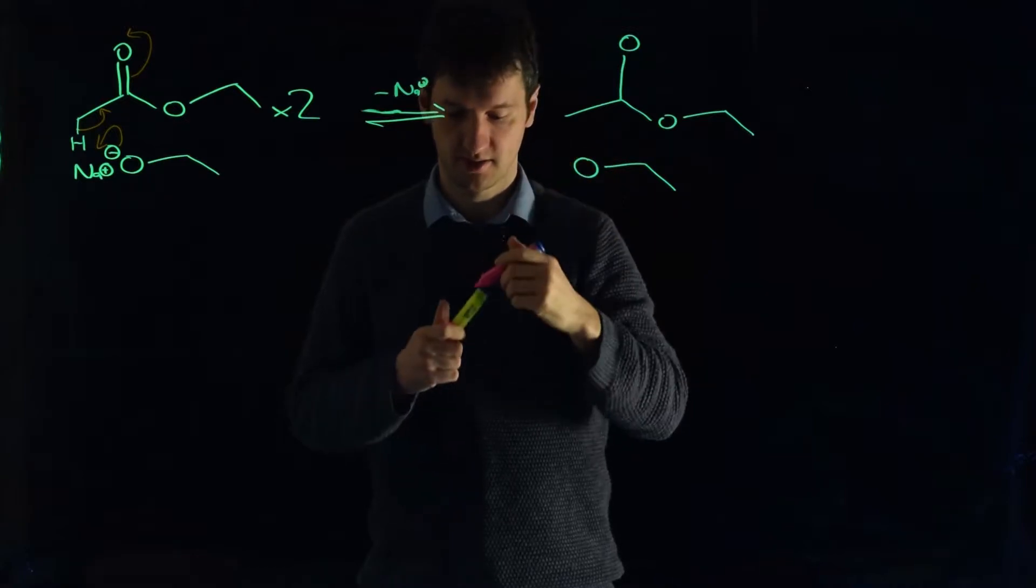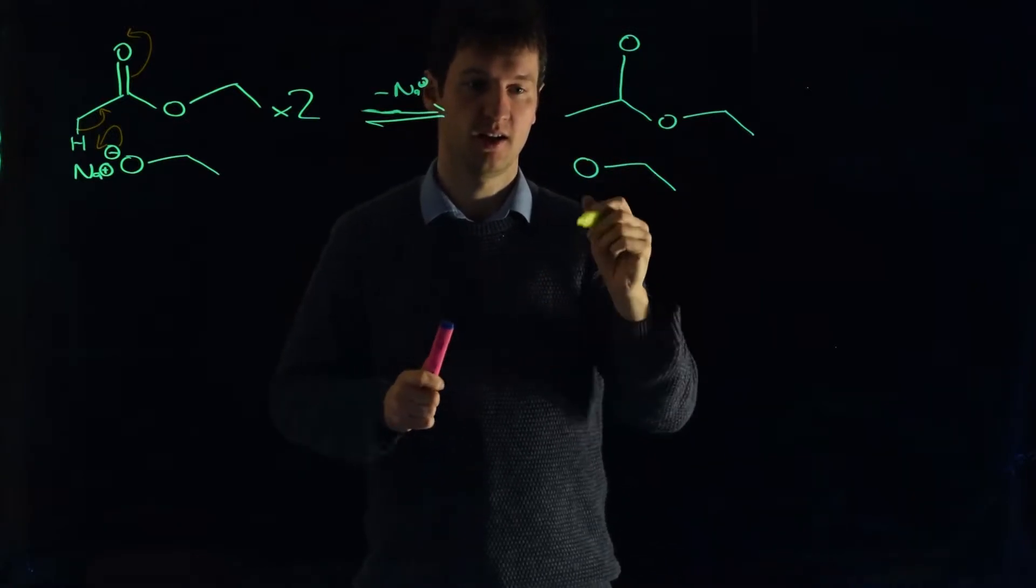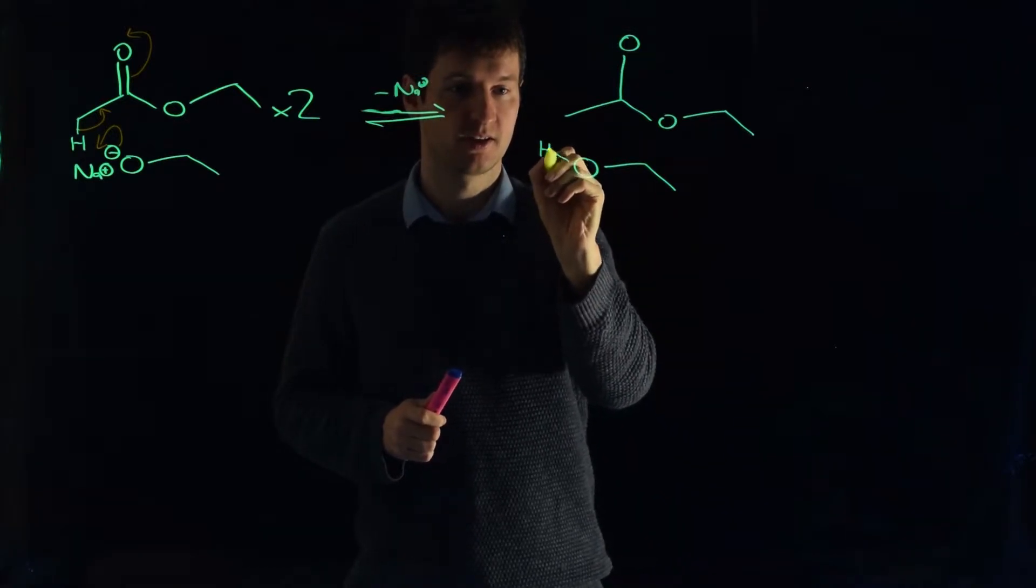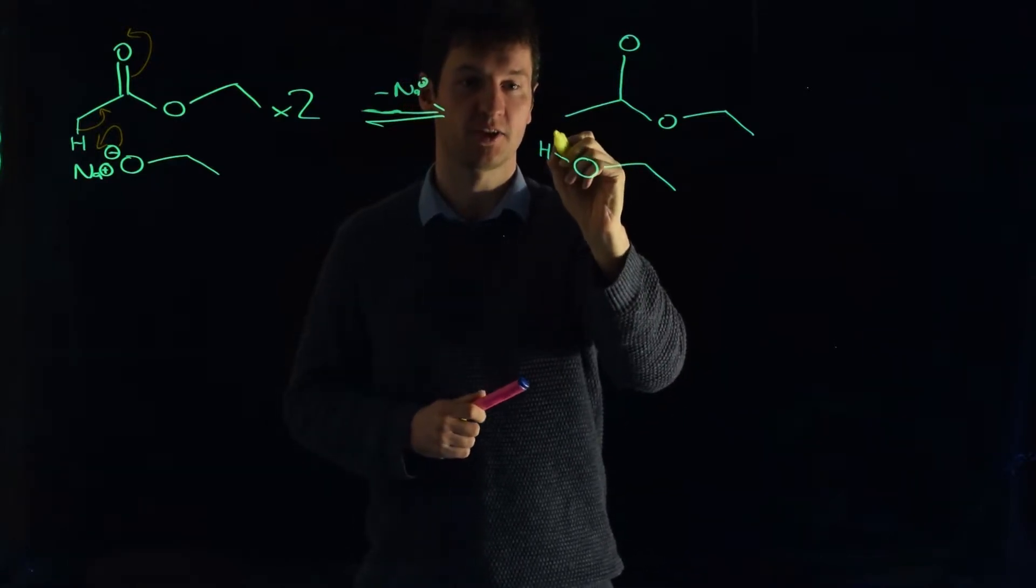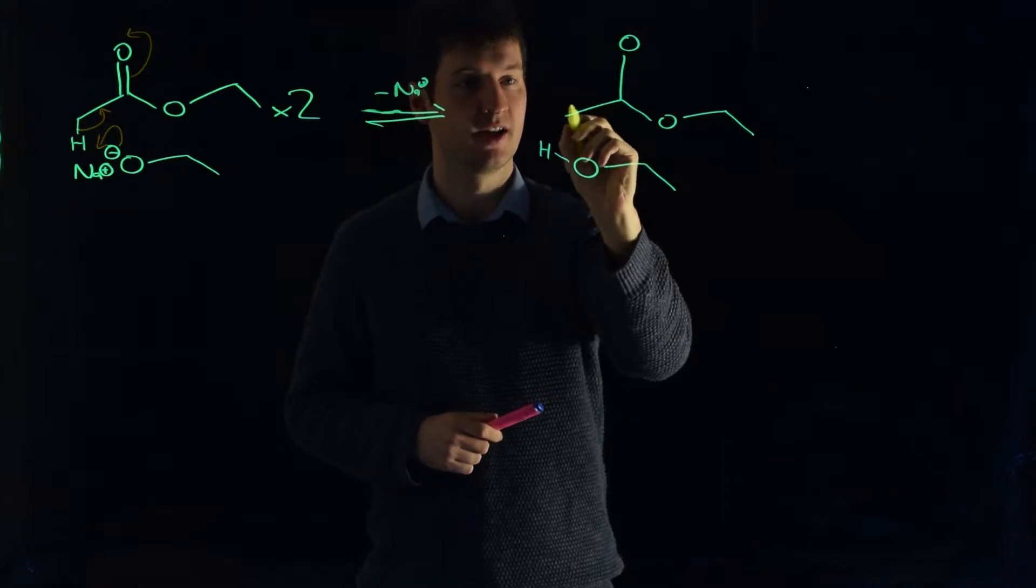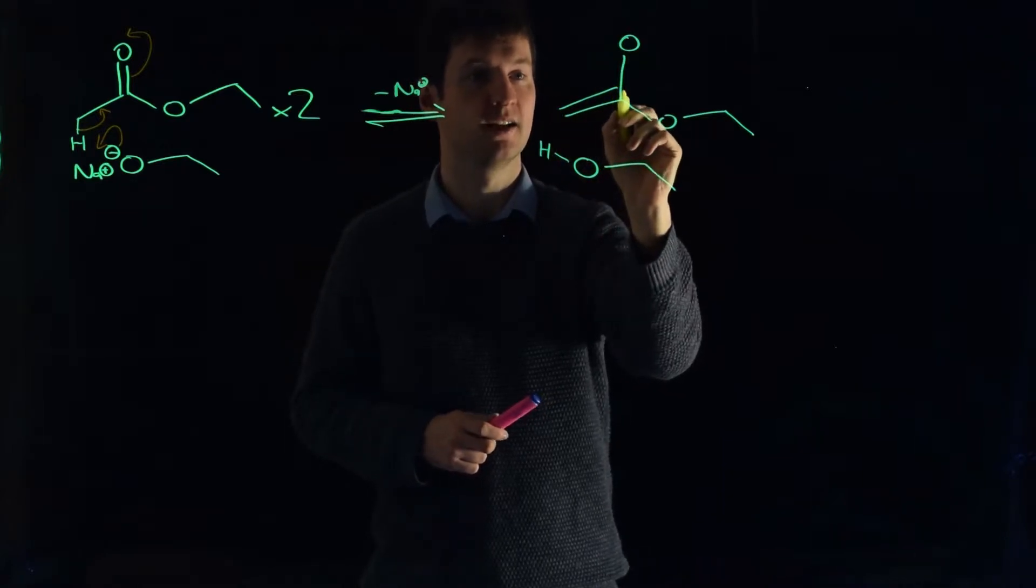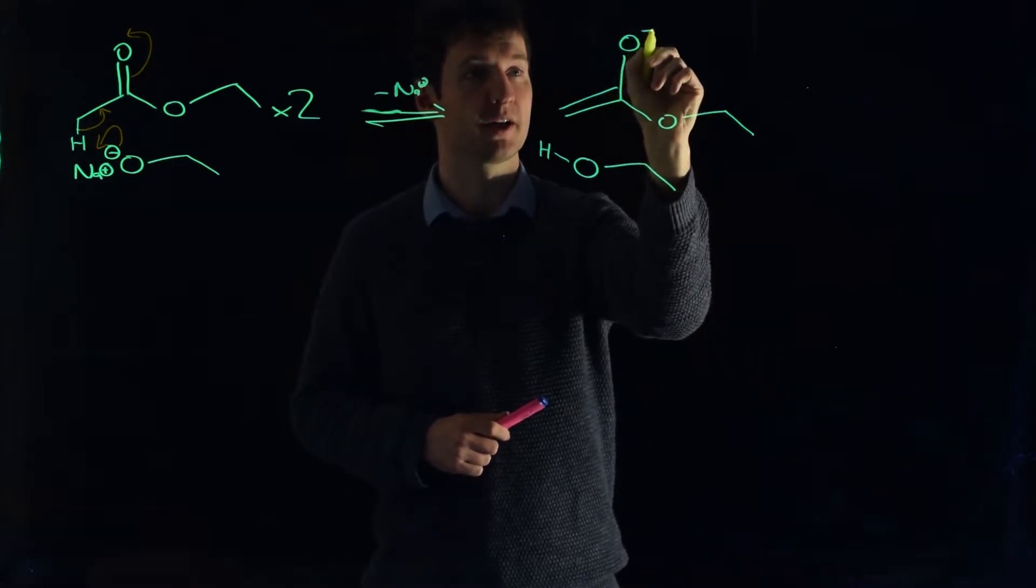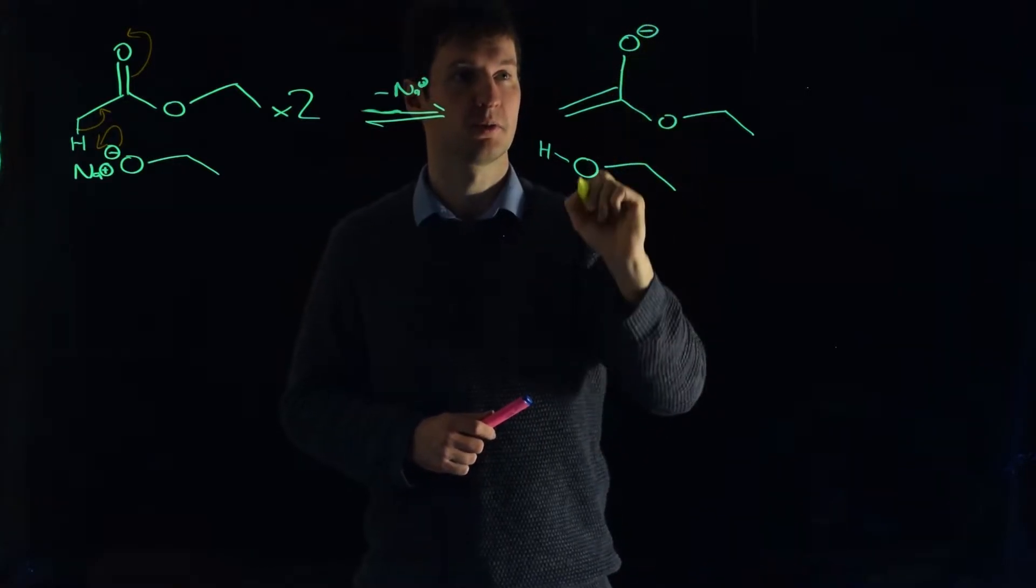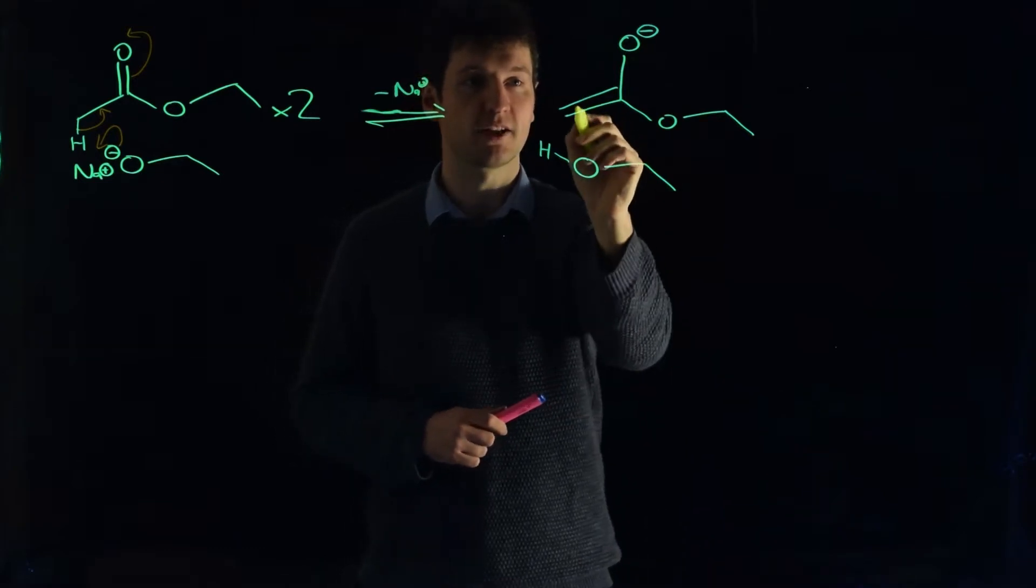So ignoring the sodium, we took these two electrons and formed a new oxygen-hydrogen bond. We took that pair of electrons that were between the carbon and the hydrogen, and we made a new carbon-carbon bond, so our ene, and we took our carbon-oxygen, one of those two bonds, and put them up here to put the negative charge on the oxygen. So we've made our enolate.